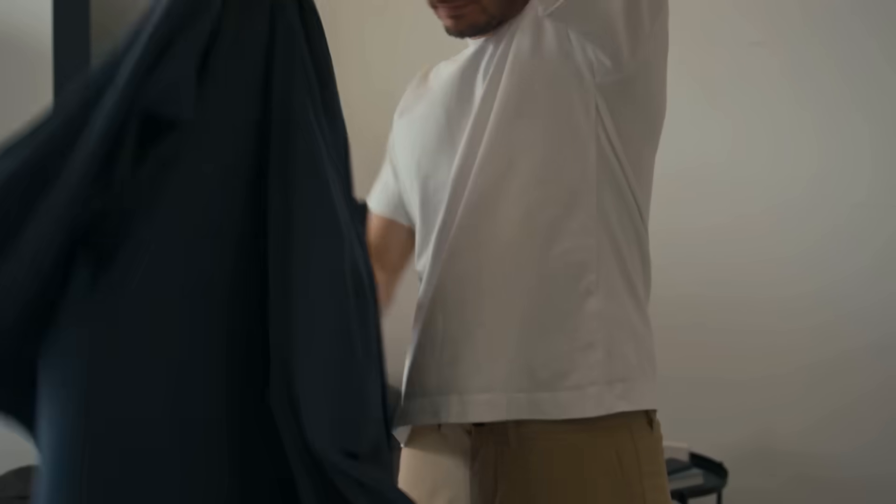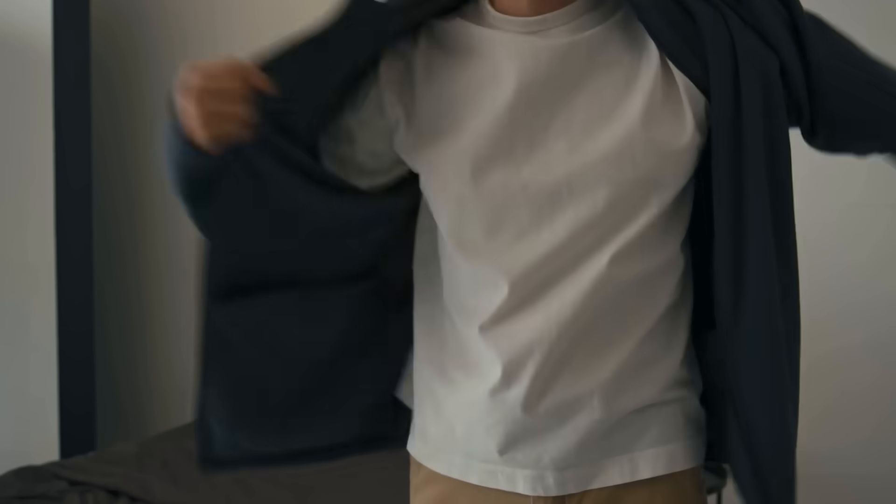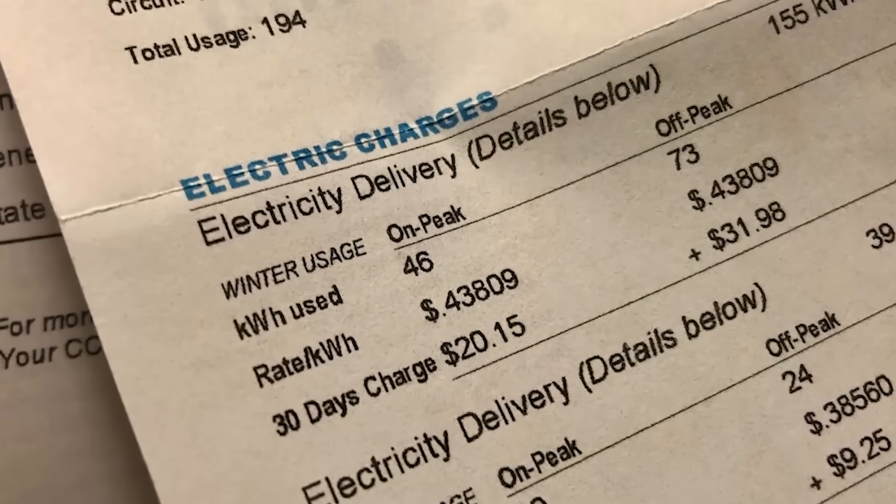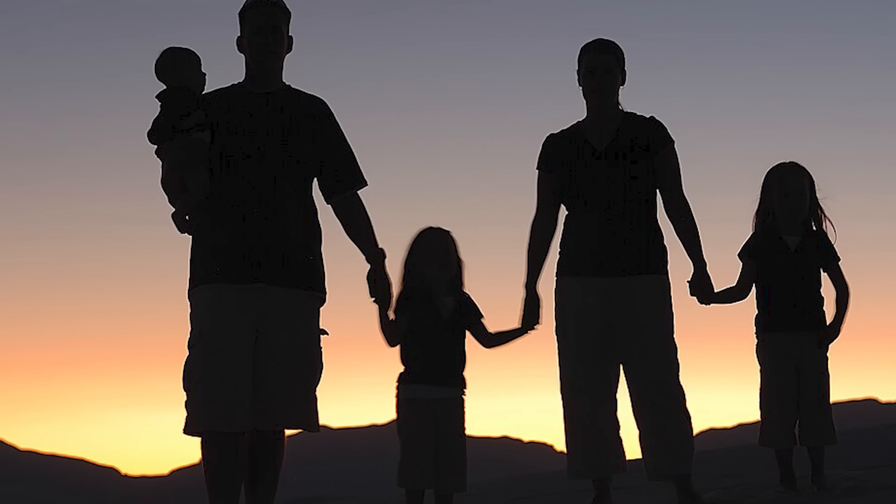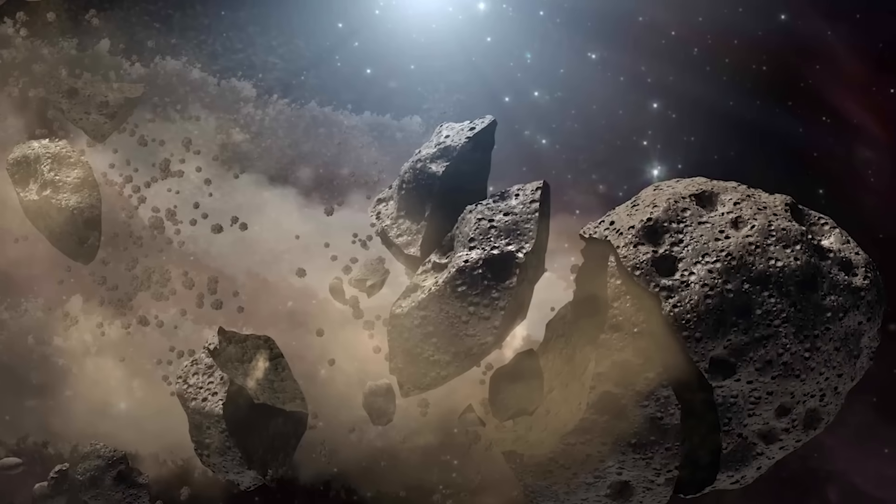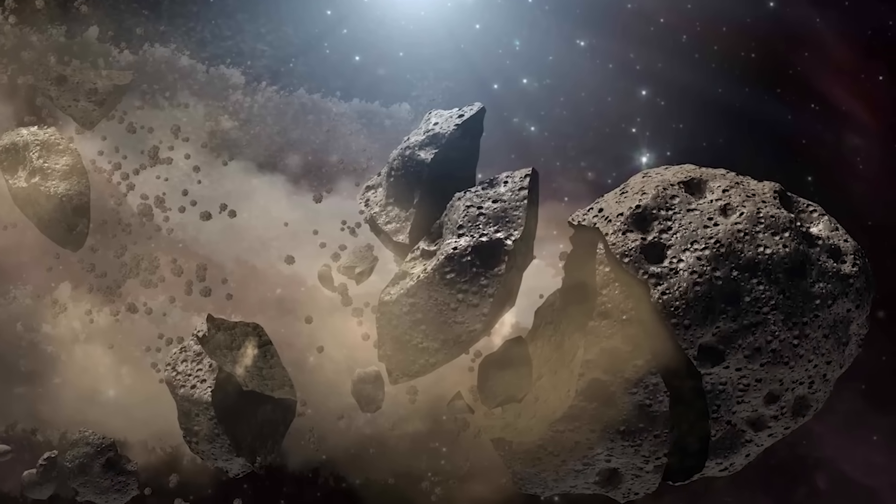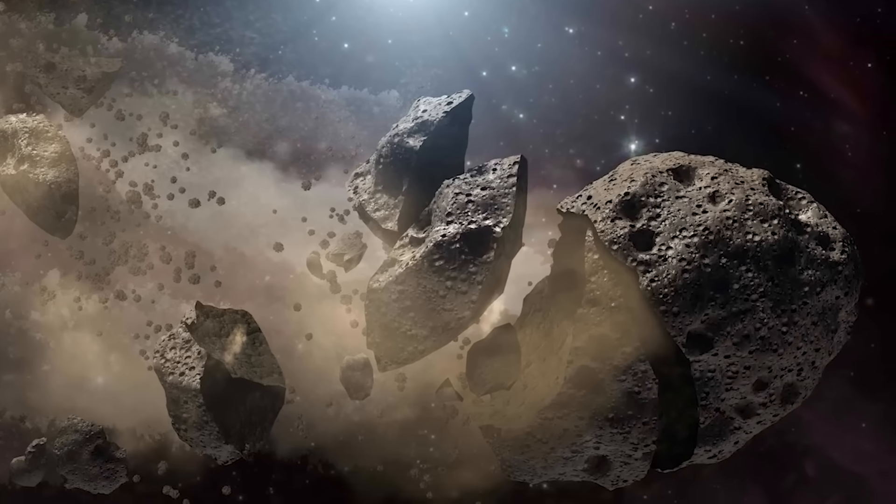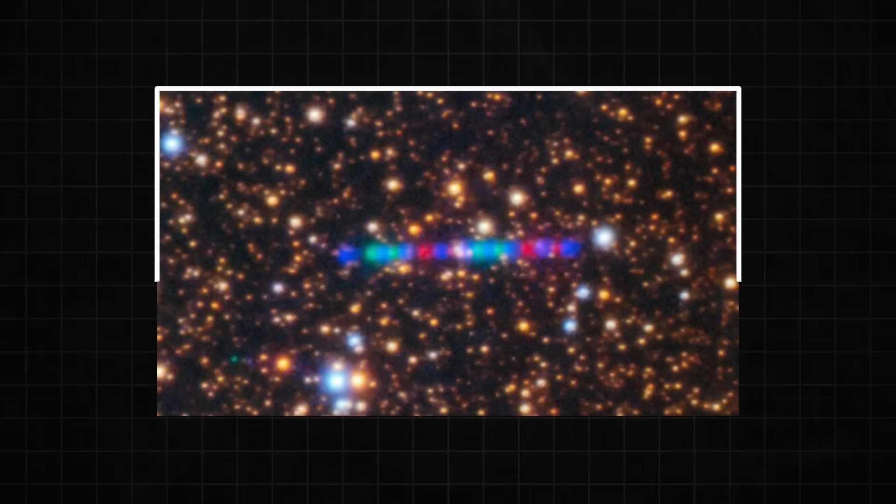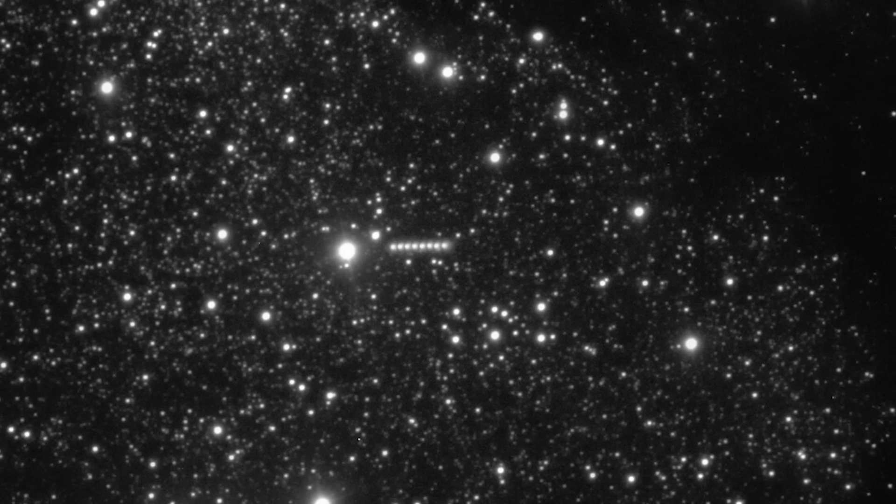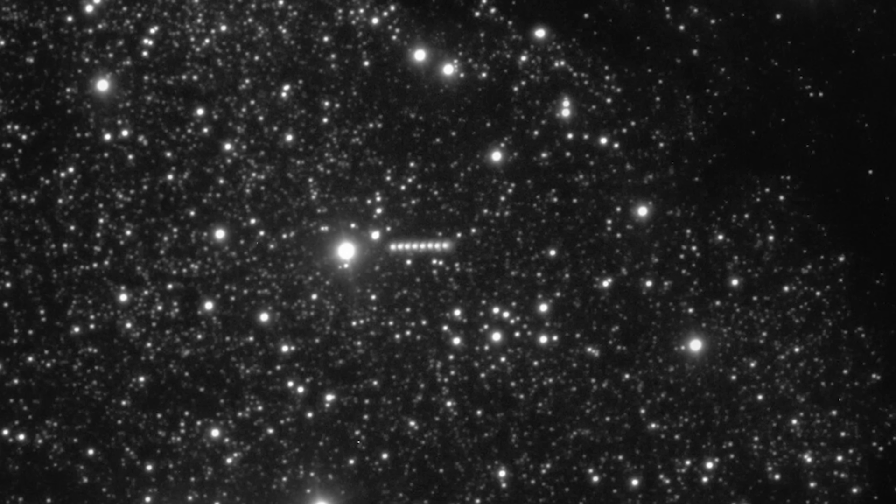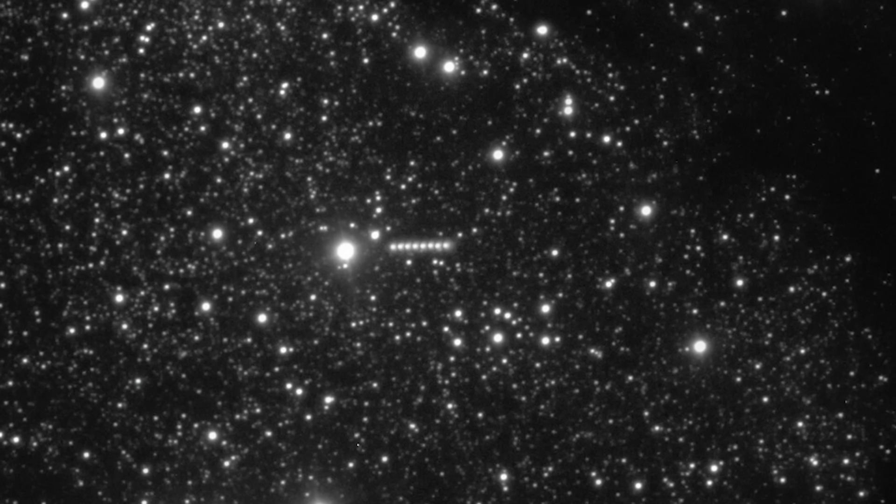For the average person, life goes on. We worry about bills, about our jobs, about the future of our families. The idea of a rock in space breaking apart feels distant, academic. But what if it's the most important event in human history? The warning of 3i Atlas might not be an external threat. The warning might be about us.